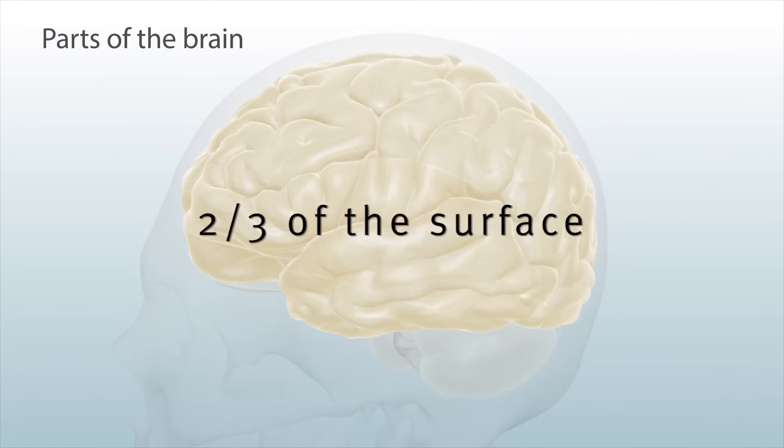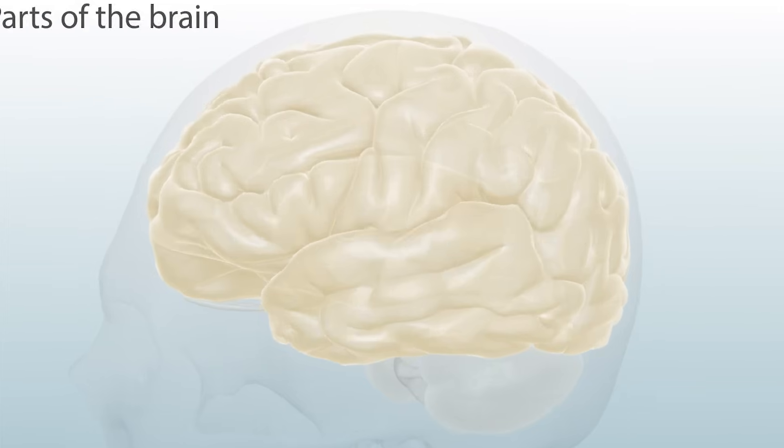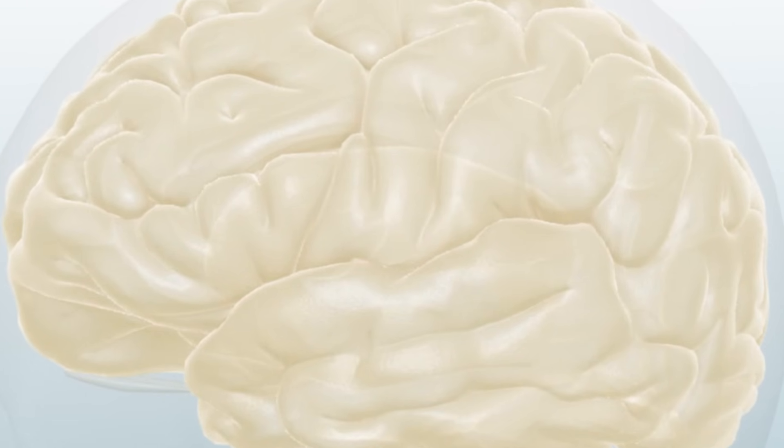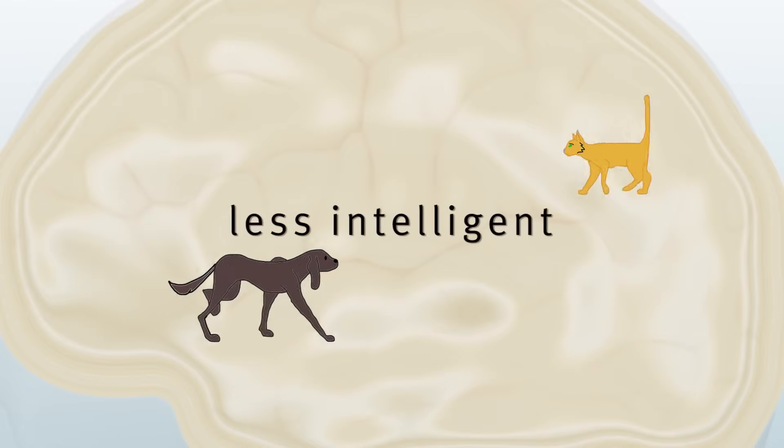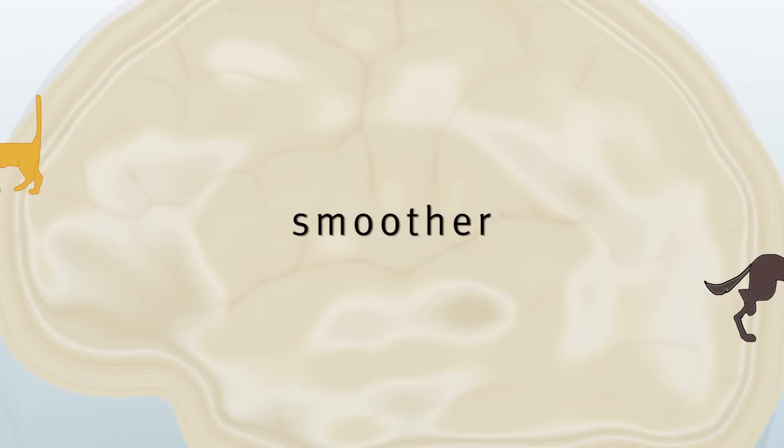More than two-thirds of the surface of the cortex hides in hundreds of little folds that make the wiggly visible lines on the brain. Animals that are less intelligent have a smoother brain surface.